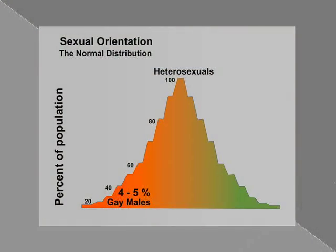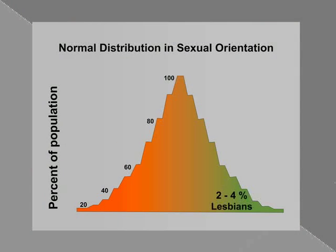If we look at the best studies, they would tell us that there is a prevalence of gay males in the population of about four or five percent — I'm talking about exclusively gay males. If you look at the prevalence of lesbians, it's about two to four percent in the general population. This does not seem to rely on ethnicity; it does not rely on nationality.